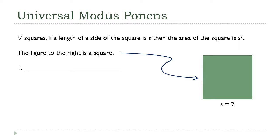So, from here, our new tool, universal modus ponens, says that the conclusion, this piece here about the area of the square, must also be true for our specific square. So, its area must be two squared or four.